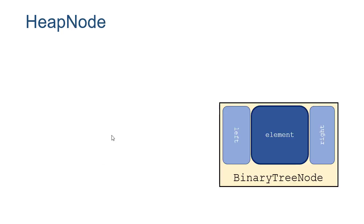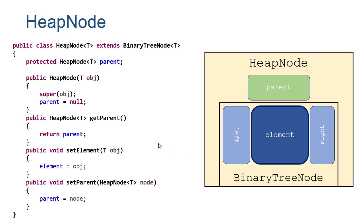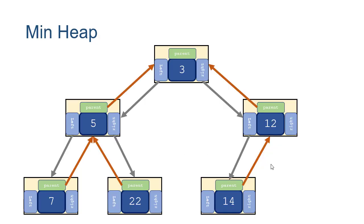Our heaps are made up of nodes just like a binary tree, and we're going to use the binary tree node as a base. Each node has references to its element and its left and right children. The heap node adds a parent reference on top of that, because we need to do comparisons both up and down the tree. So our HeapNode class extends BinaryTreeNode, adds a parent member, calls the super constructor, initializes parent to null, and provides getters and setters. The parent reference for the root is null, just as left and right child references at a leaf are null.